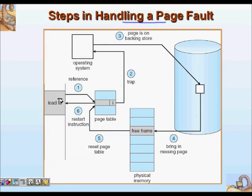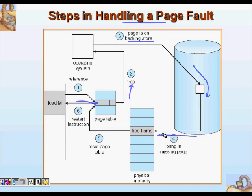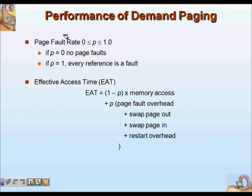Here is a pictorial representation of the steps in handling a page fault. The code makes a reference to a page, finds that the valid bit is invalid, and makes a trap to the operating system. The operating system then finds the page on the backing store — secondary memory — brings the missing page into a free frame in physical memory, and puts the updated entry into the page table.